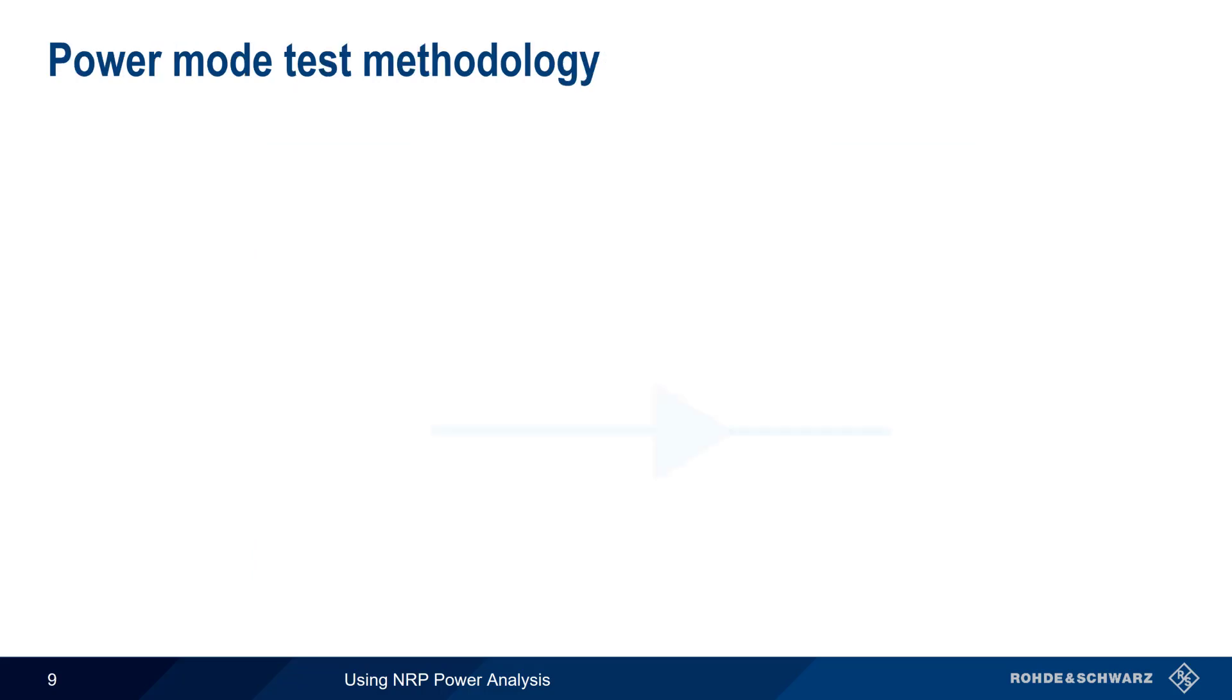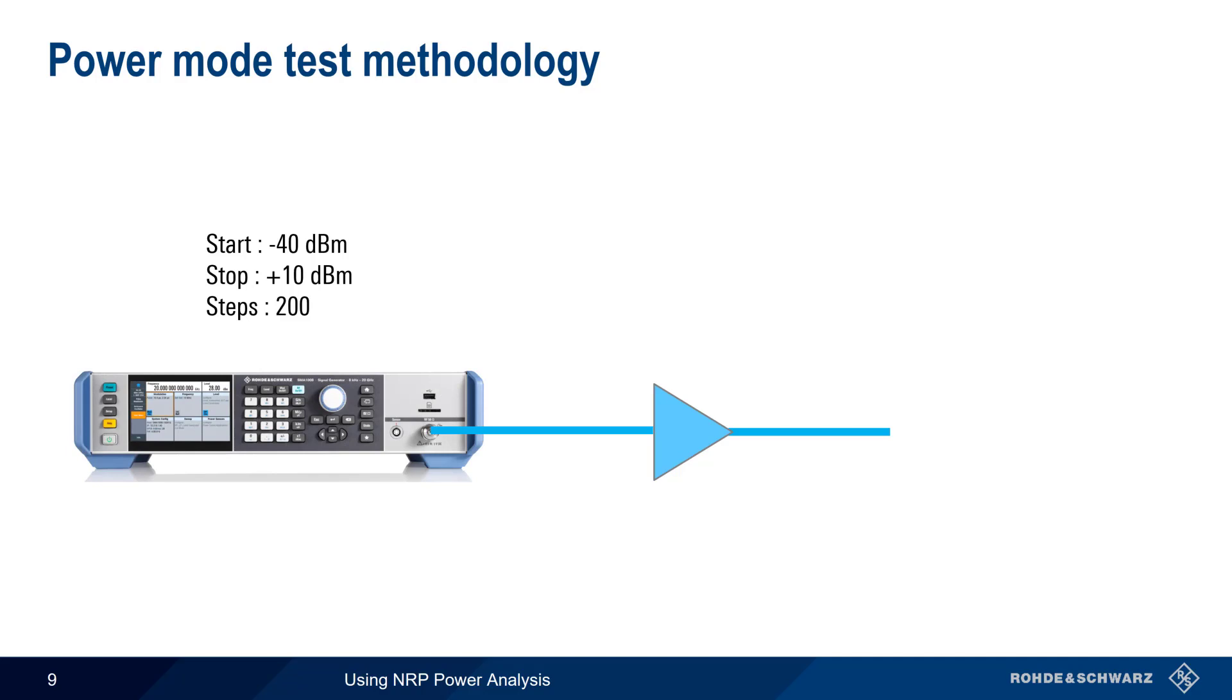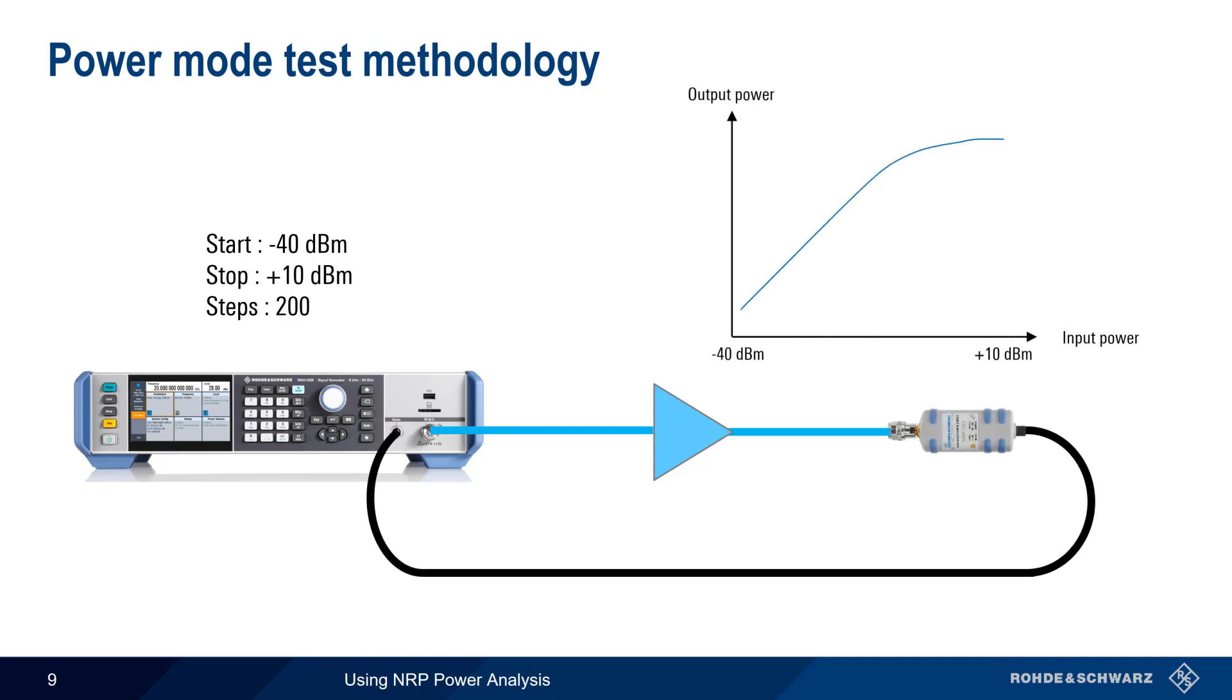Determining the gain curve and compression point of a simple amplifier is a good example of a power mode measurement. As before, we specify minimum and maximum values. Here are the input power levels and the number of steps between them. The SMA then transmits a fixed frequency signal at each one of these power steps and measures the received power at the attached NRP sensor. The power viewer application plots the results on a graph, allowing us to view and measure our amplifier parameters.